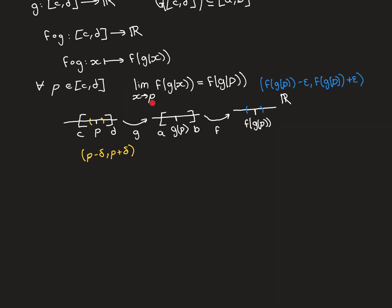To show that the limit as x approaches p of f(g(x)) equals f(g(p)), I apply the epsilon-delta definition. I need to show that for all epsilon intervals around f(g(p)) — shown in blue, from f(g(p)) − ε to f(g(p)) + ε — I can find a delta interval around p, shown in yellow, from p − δ to p + δ, such that all points in that interval are mapped into the epsilon interval.